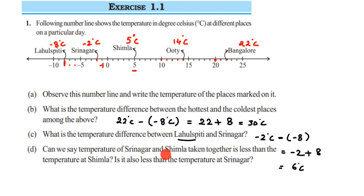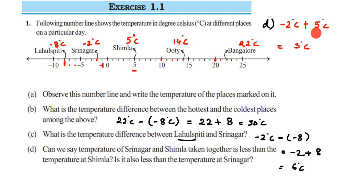Shimla's temperature is plus 5 degrees Celsius, and Srinagar's temperature is minus 2 degrees Celsius. Adding these: minus 2 plus 5. When adding integers with different signs, you subtract the values: 5 minus 2 equals 3. Then you apply the sign of the greater integer — 5 is greater and its sign is positive — so the result is plus 3 degrees Celsius.